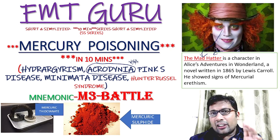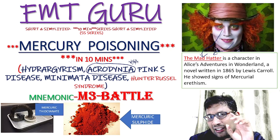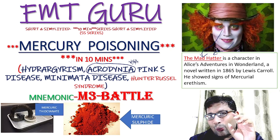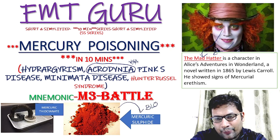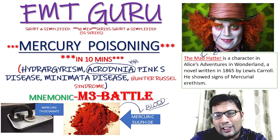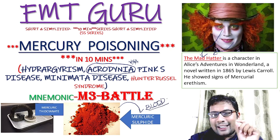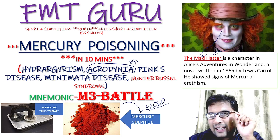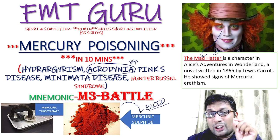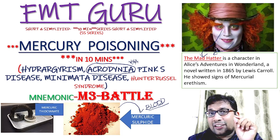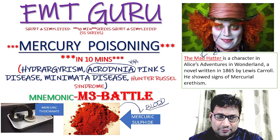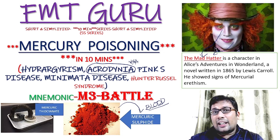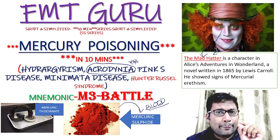In the picture you can see two important images. One is a red color compound which resembles blood — that is mercuric sulfide, asked in exams. And mercuric thiocyanate is used in the Diwali winding snake firework. With this we will now start the clinical features of mercury poisoning.